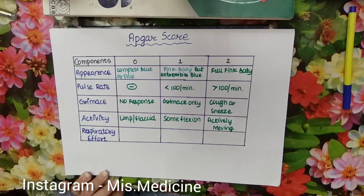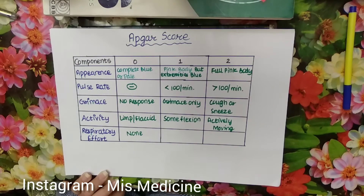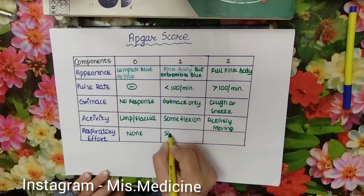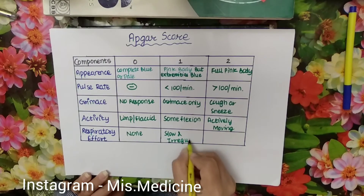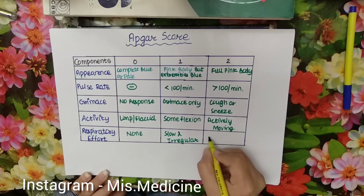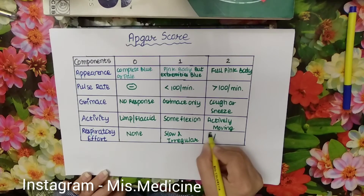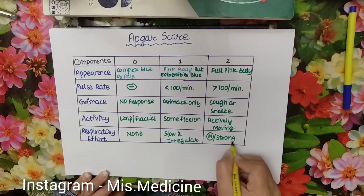Next and last is respiratory effort. If there is no effort, the score is 0. If breathing is slow and irregular, the score is 1. If there is normal or strong respiratory effort, the score is 2.